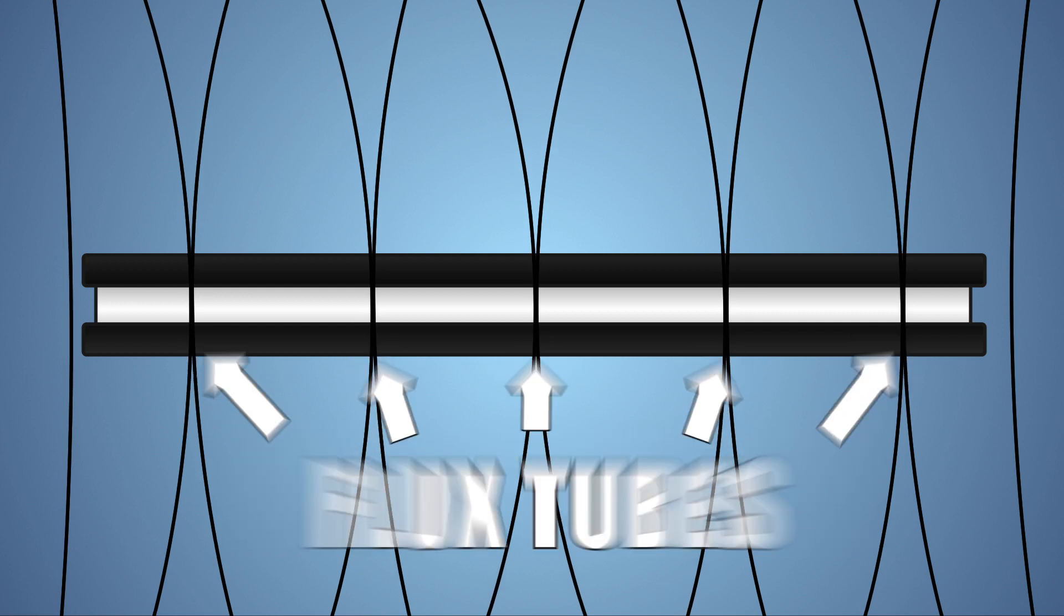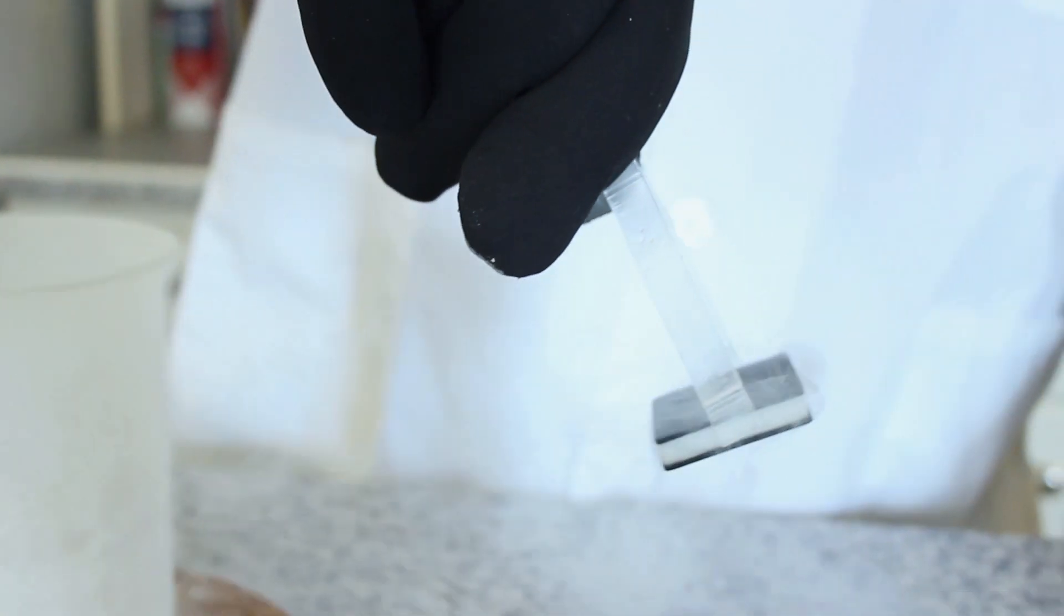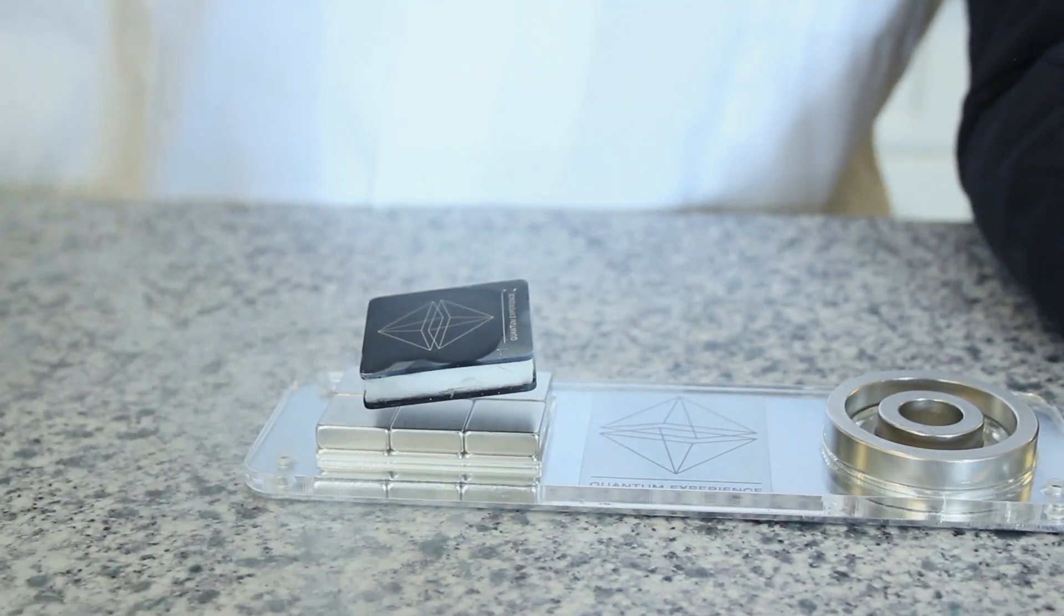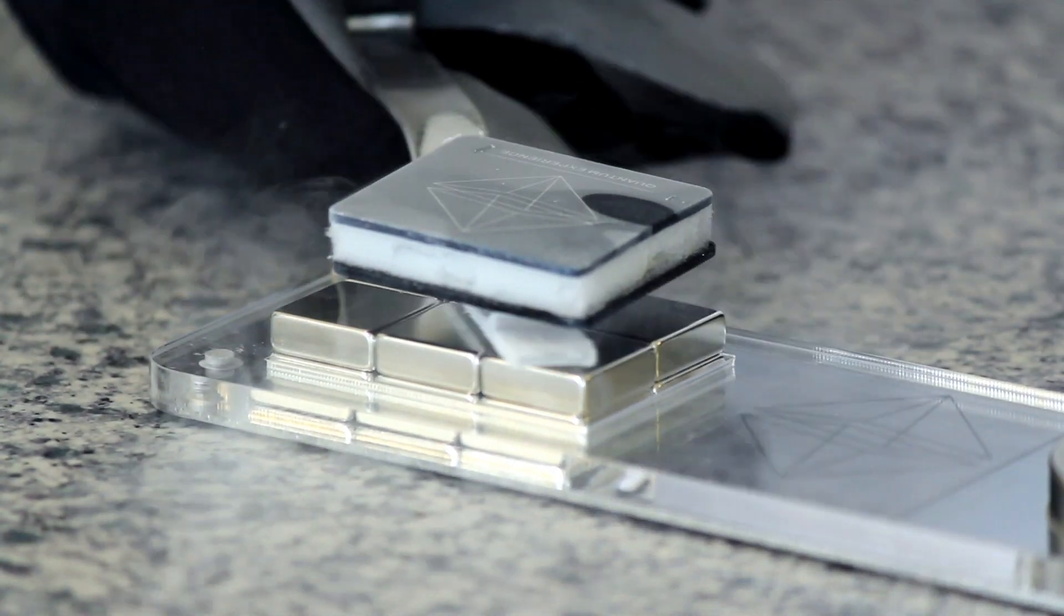These tubes become trapped or pinned in place within the superconductor and are so small that around 100 billion can be found in the levitator. The trapped flux tubes hold the superconductor in place, preventing any spatial movement, locking our superconductor in mid-air.